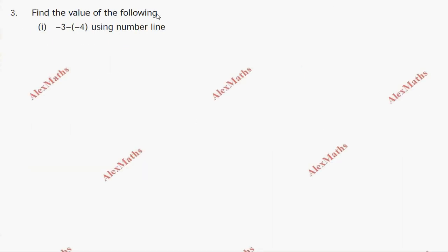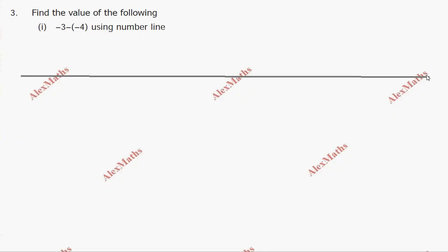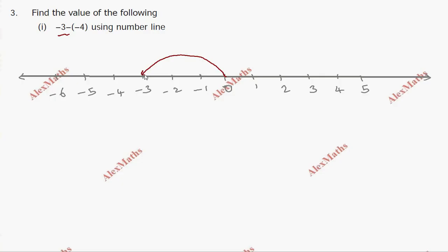Question number 3: find the value of the following. First substitution: minus 3 minus of minus 4 using number line. So we have 1 number of 3. This is the number line. We have zero, then 1, 2, 3, 4, 5 on the positive side, and minus 1, minus 2, minus 3, minus 4, minus 5, minus 6 on the negative side.